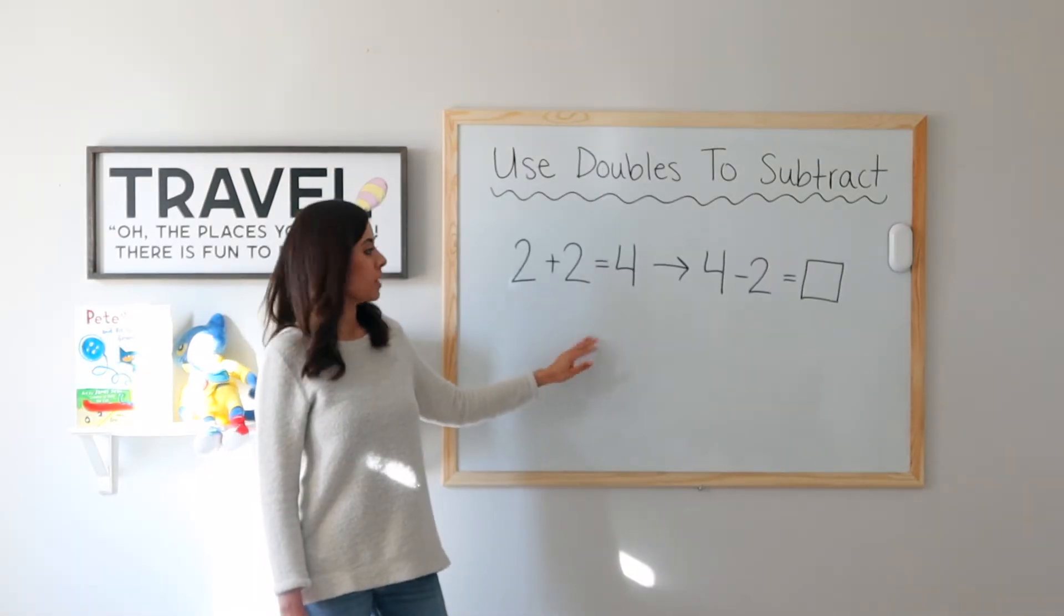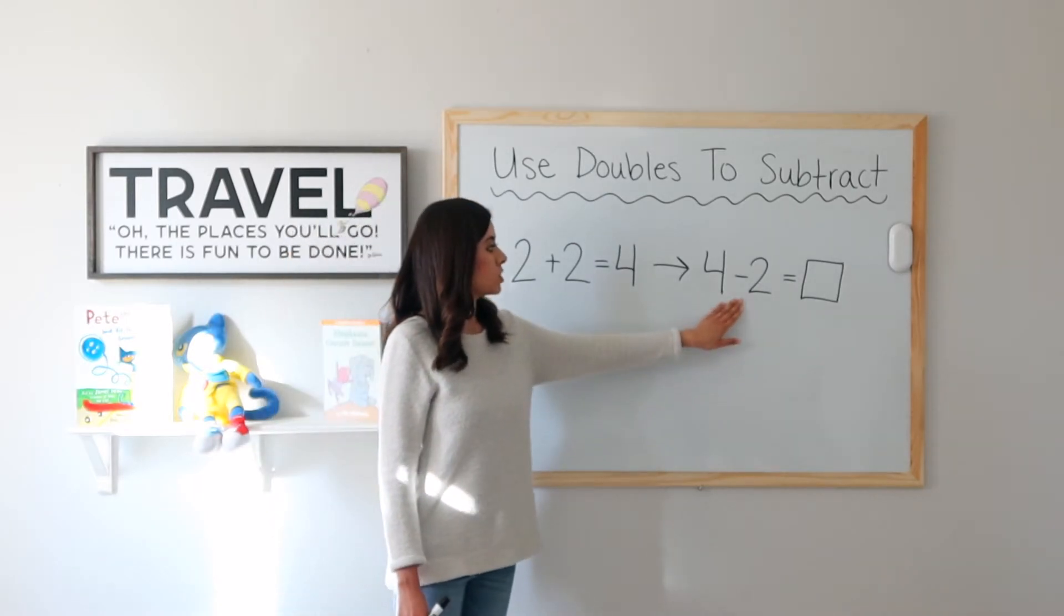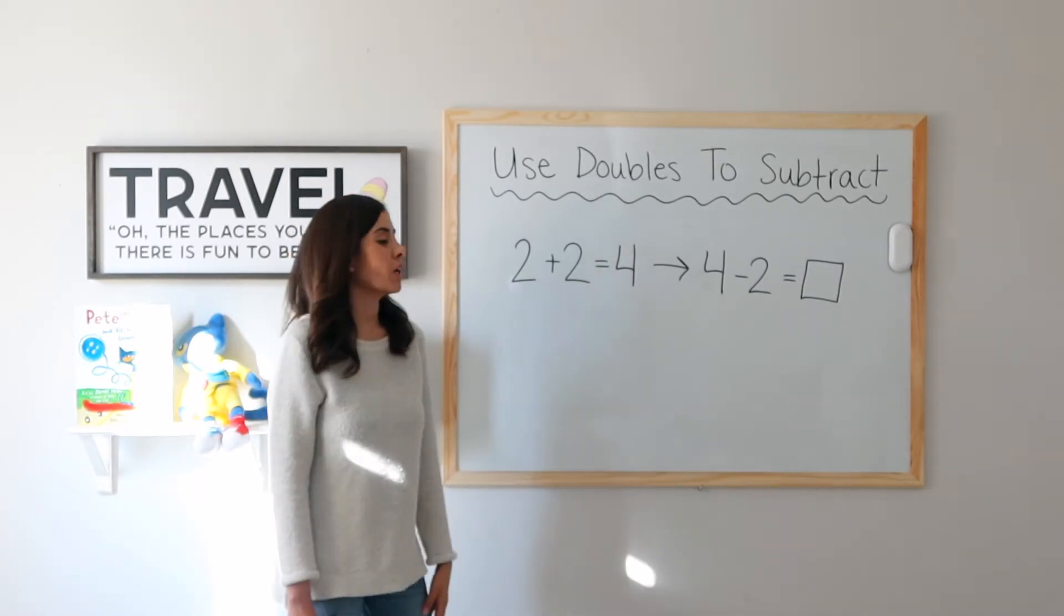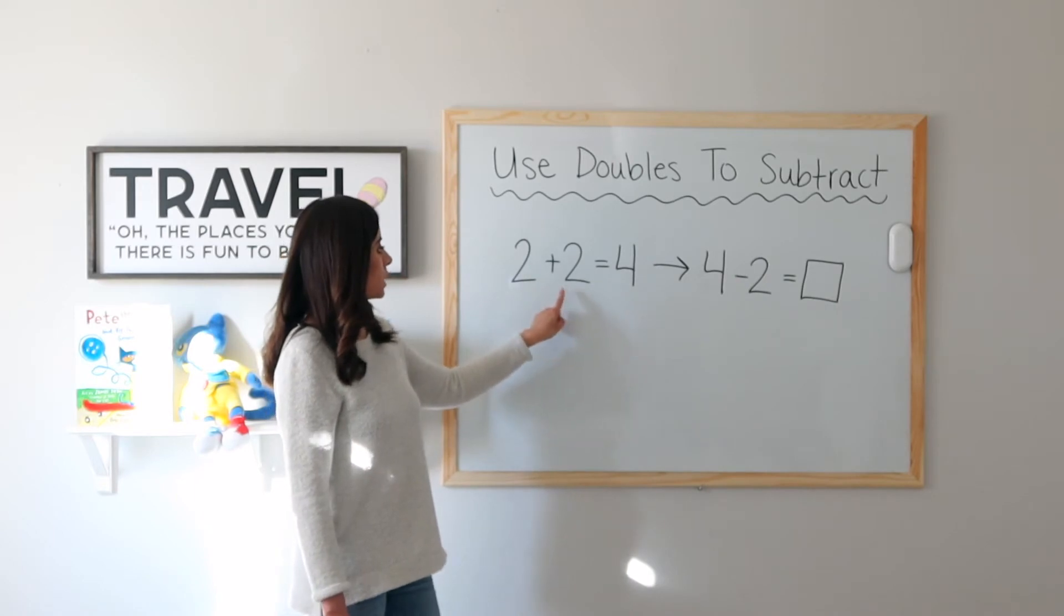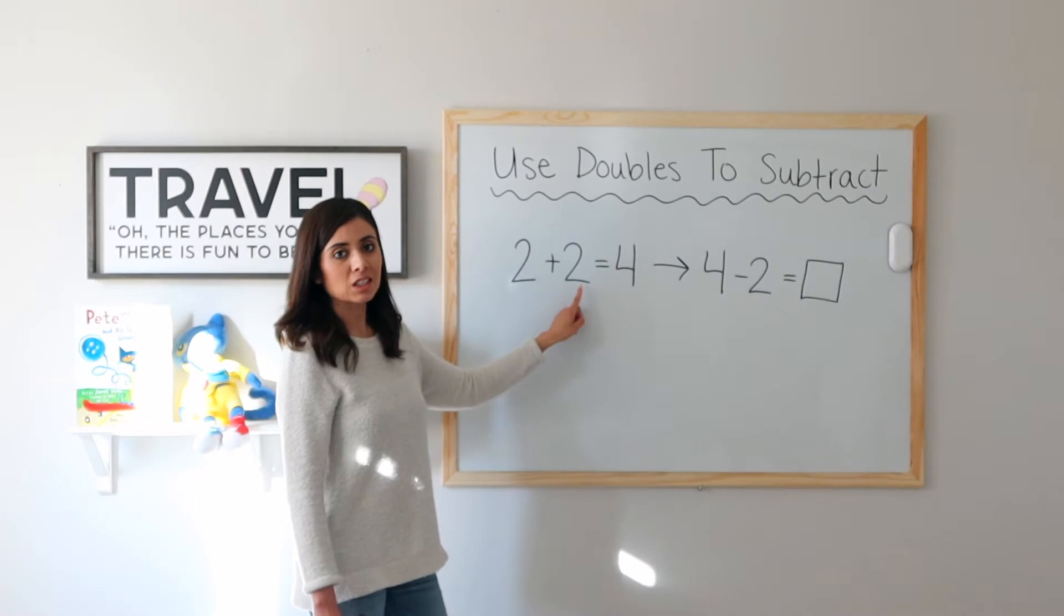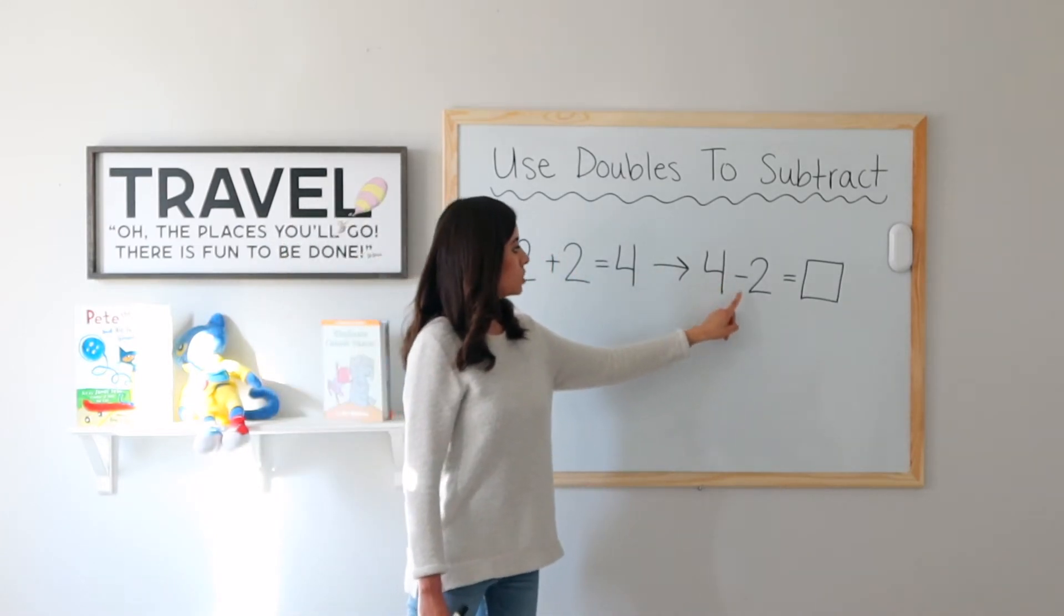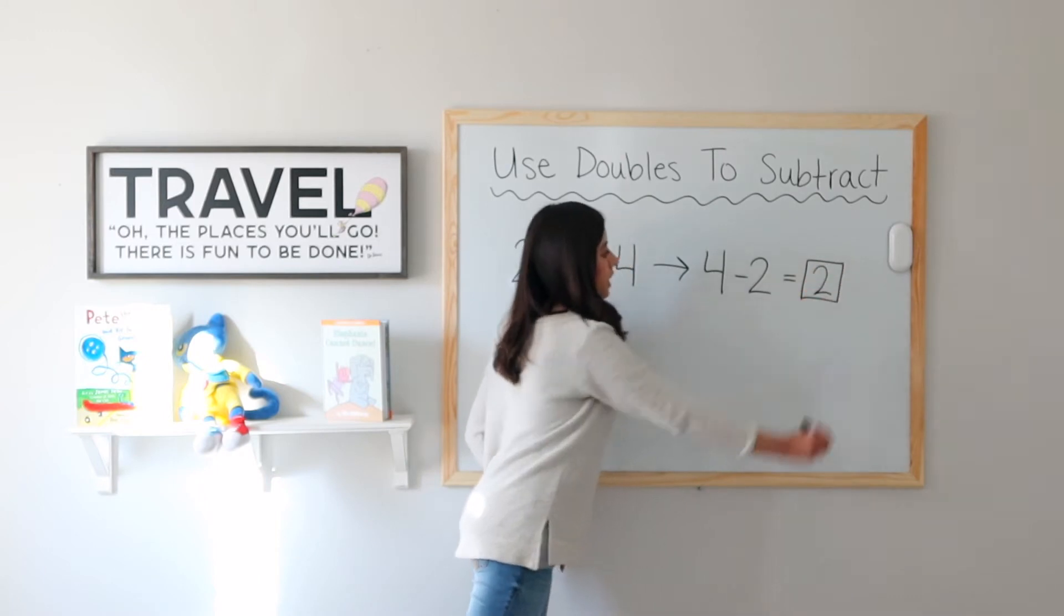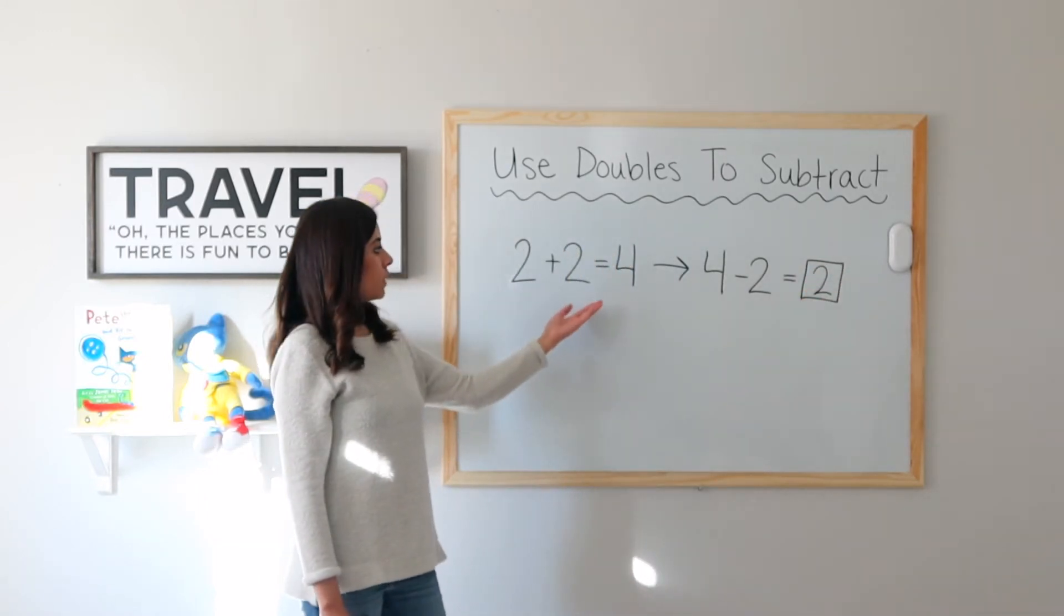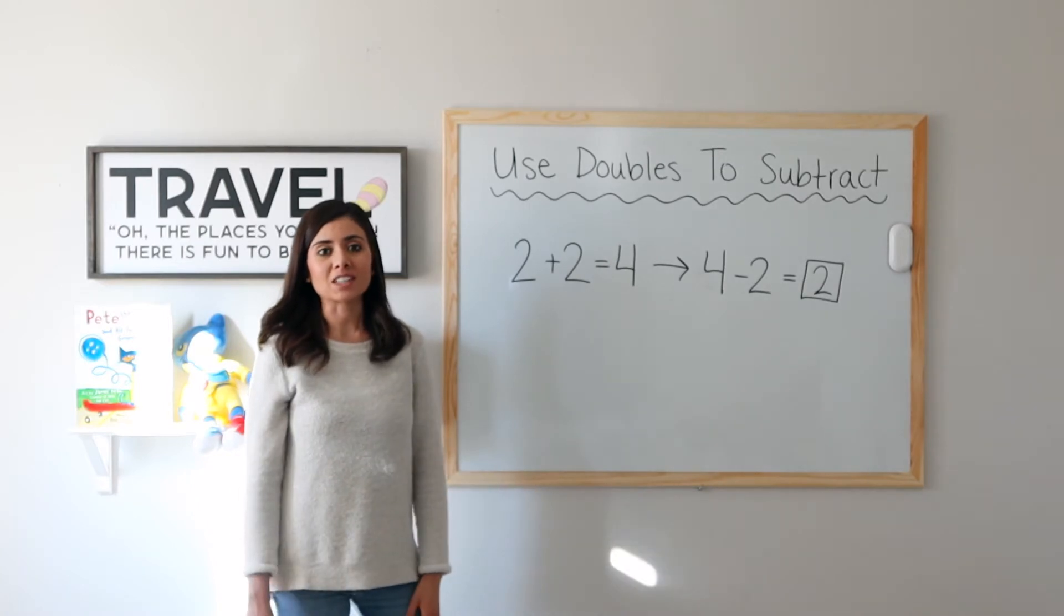2 plus 2 equals 4. This doubles fact can help me find 4 minus 2. Watch this. 2 plus 2 equals 4, so 4 minus 2 equals 2. Again, I read my doubles fact backwards as a subtraction problem, and that helped me find my answer.